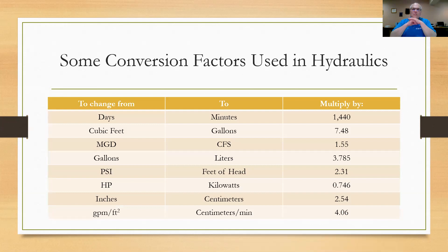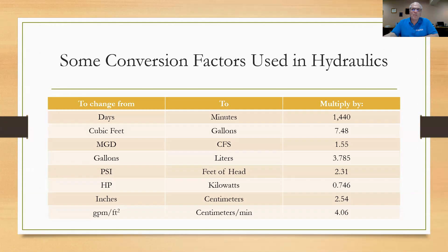This is the conversion table of factors at the end of each of our hydraulic series. Notice the last entry at the bottom: gallons per minute per square foot converts to centimeters per minute by multiplying by 4.06, which you could use as a shortcut. Always refer to the tables at the end of the hydraulic series. Hopefully you got something out of this — click the buttons to see more videos or subscribe to this channel, and hopefully these are helping out for your exam. Thank you.